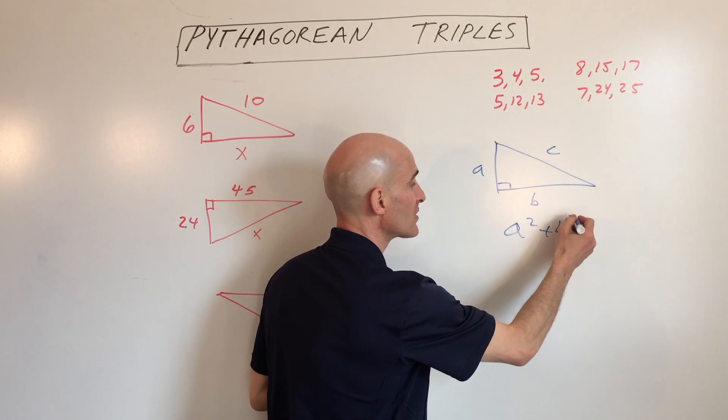Now on this one, we look at 24 and 45. What goes into 24 and 45? 3. So if we divide this by 3, we'd get 8. Here we would get 15. Now it looks like this one: 8, 15, 17. So that means that 17 is the hypotenuse, across from the right angle - that's the longest side.